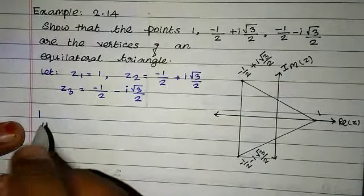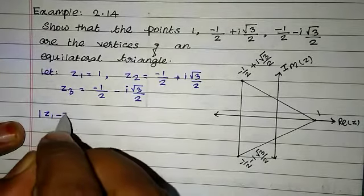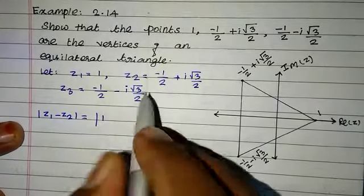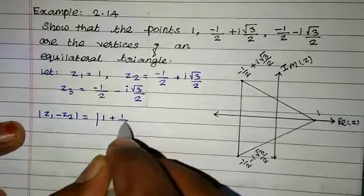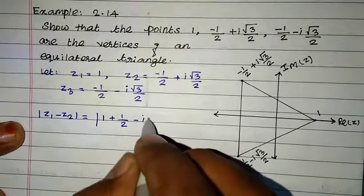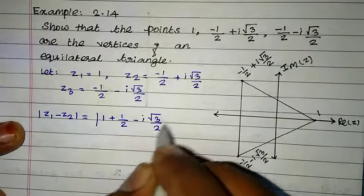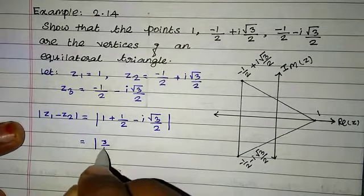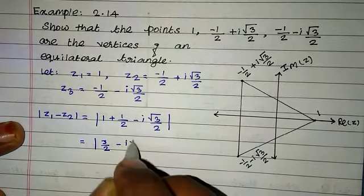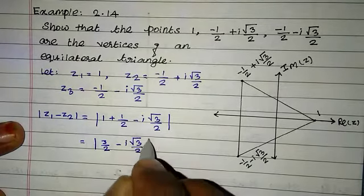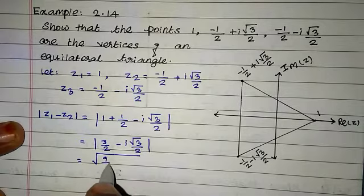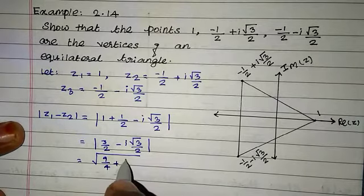First, compute the modulus of z1 minus z2. That is modulus of 1 minus z2, which equals modulus of 1 plus 1 by 2 minus i root 3 by 2, equal to modulus of 3 by 2 minus i root 3 by 2.